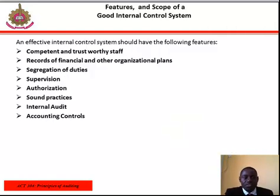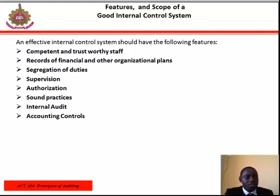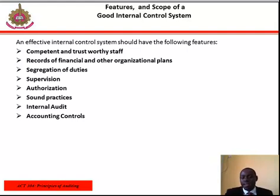Features and scope of a good internal control system. An effective internal control system should have the following features: competent and trustworthy staff, records of financial and organizational plans, segregation of duties, supervision, authorizations and practices, internal audit, and accounting records.